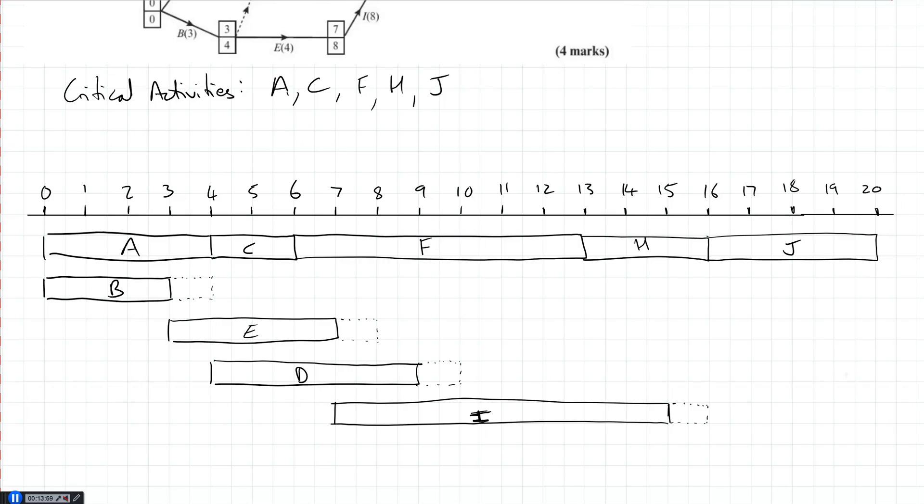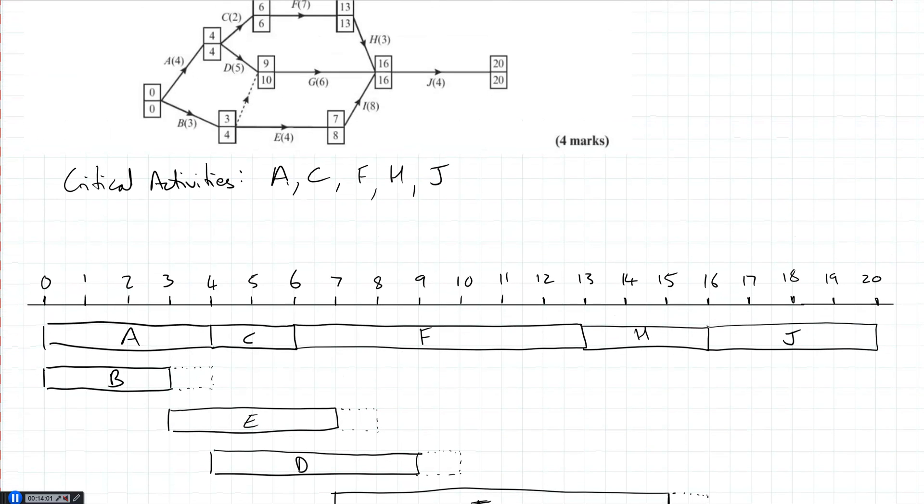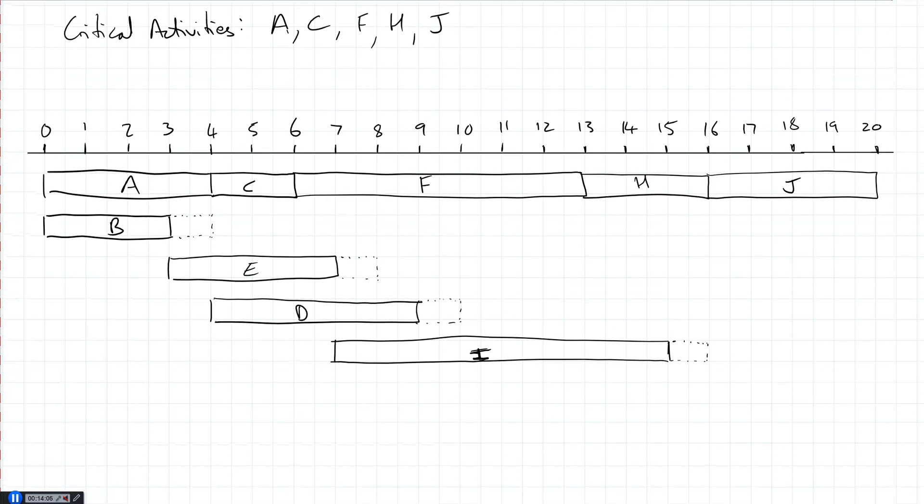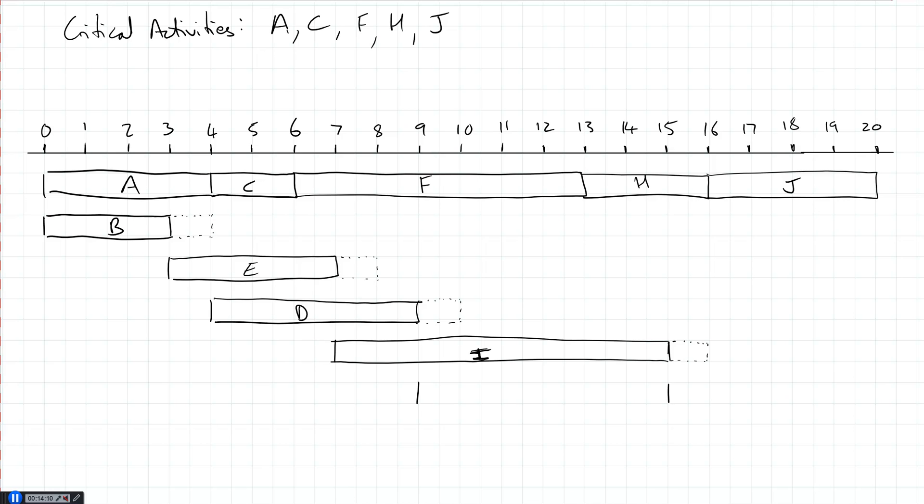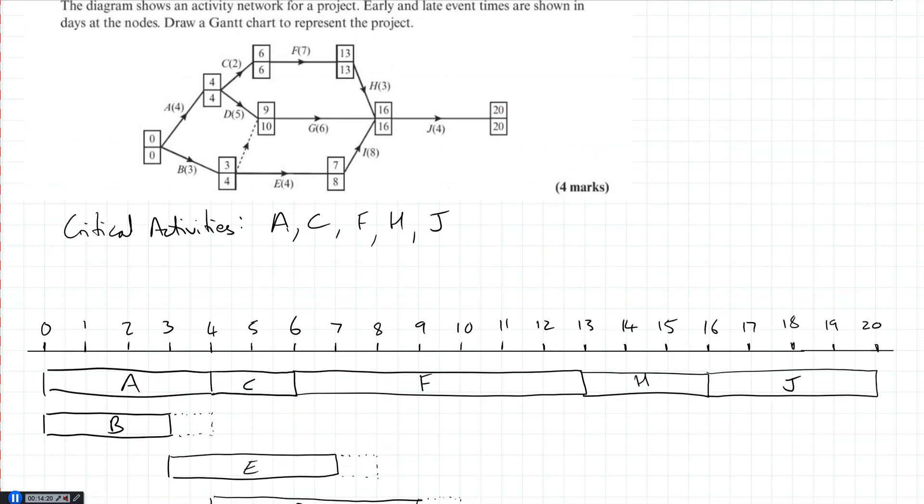So G can start at 9. Take 6. So it goes up to 15 as well. Float of 1 as well because it goes up to 16.